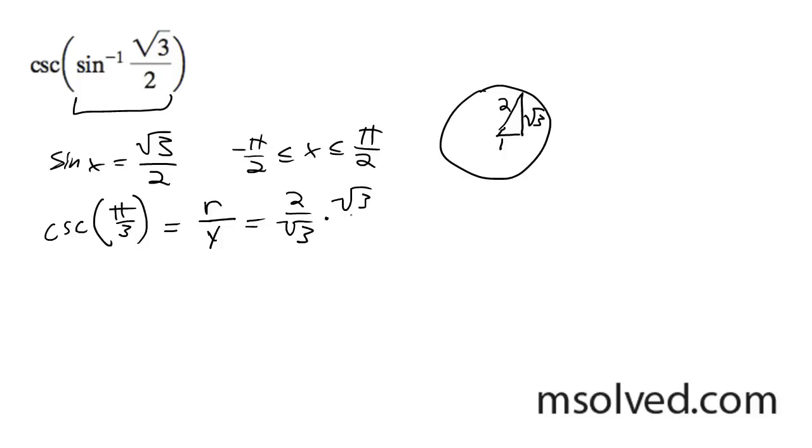And we want to multiply through, get rid of the radical on the bottom. And we're going to simply end up with 2 root 3 over 3. That's it. That's our solution.